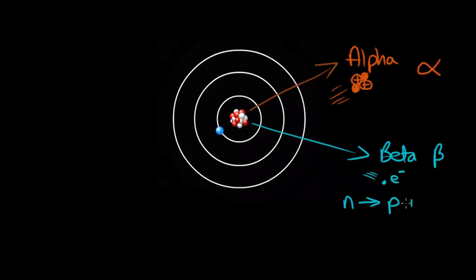That high speed electron is then ejected from the nucleus. Or we could have gamma radiation being emitted and gamma radiation is just a wave, an electromagnetic wave travelling at the speed of light.